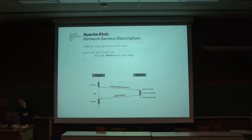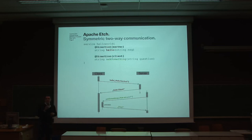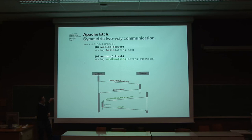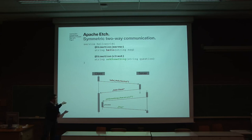But there is more you can do. I told you Edge is symmetric — what does that mean? You can define services in your IDL and annotate them using direction primitives. You can say this Hello method is something sent to the server, and this Ask Something method is something sent to the client. So in Edge, it doesn't make a difference who is the server and who is the client — you just communicate on the wire. Here you see the client and the server: you say hello to the server, it says hello to the client, and from the other side you could ask something to the client.